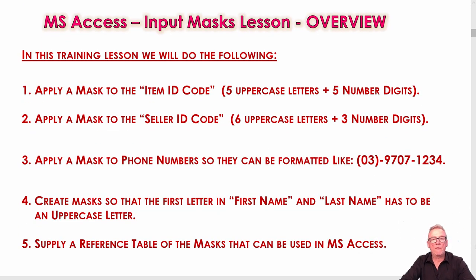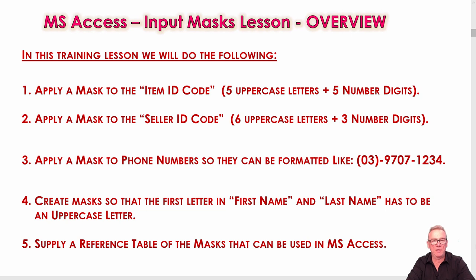In this lesson we're going to do five different things. First, fix up the item ID code in the stock items table — that primary key needs five uppercase letters and five digits. Second, add an input mask to seller IDs requiring six uppercase letters followed by three numerical digits, none left blank. Third, apply a mask to phone numbers formatted Australian style as 10-digit numbers. Fourth, create masks so first and last names start with an uppercase letter followed by optional lowercase letters. And finally, supply a one-page reference table for future use.